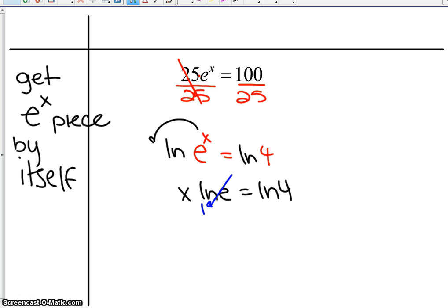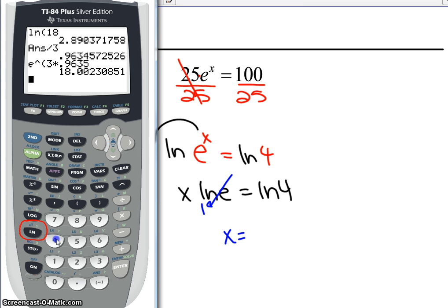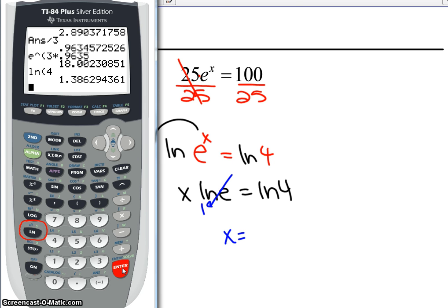X comes out in front. Natural log of e again is 1, so x equals natural log of 4, 1.3863.